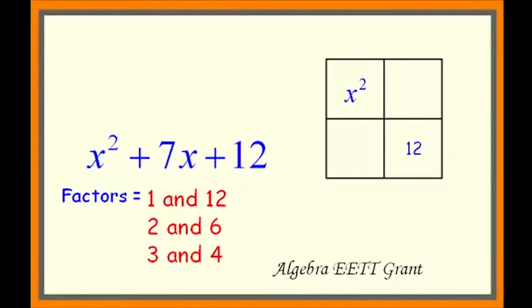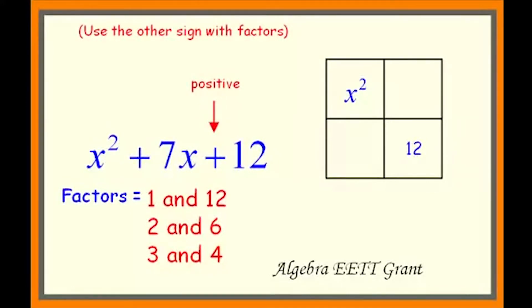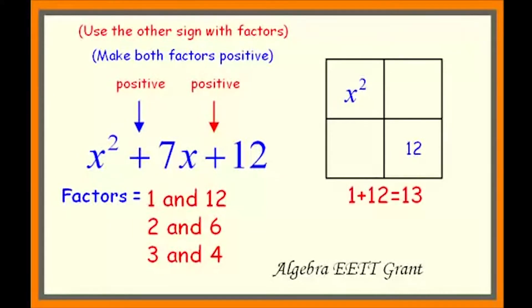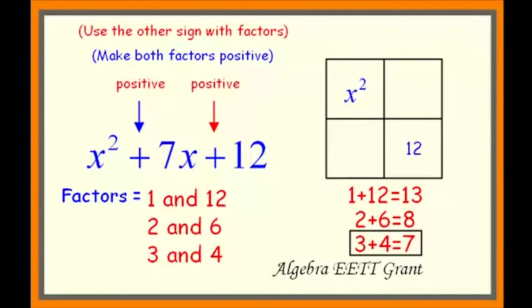We need to break 7x into one of those factor pairs times x. Since the last term is plus, the factors are the same sign, and since the middle term is positive, they're both positive. Adding the pairs: 1 plus 12 is 13, 2 plus 6 is 8, and 3 plus 4 is 7 — that's the middle term. So we use 3x and 4x. Since both are positive, the order in the Punnett square doesn't matter; I've placed 3x in the bottom left and 4x in the top right.